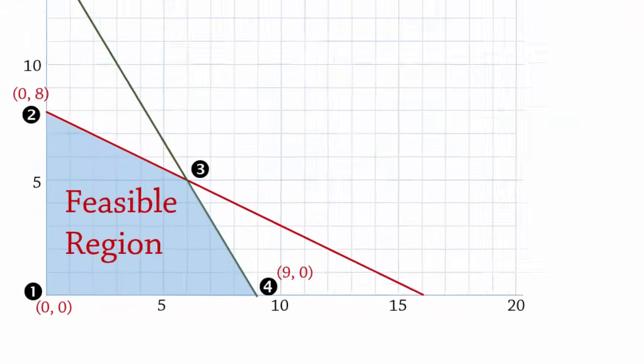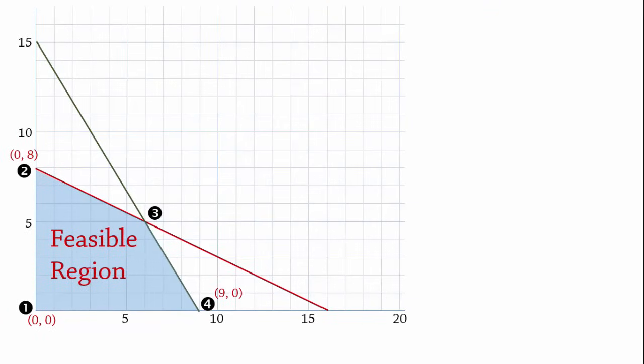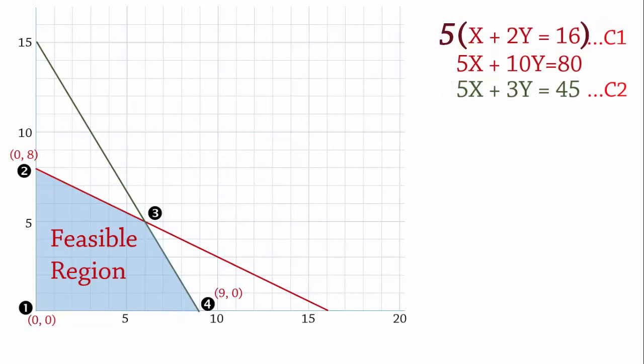So let's see a way to solve the 2 equations simultaneously to determine the actual coordinates. Here are the lines for the 2 constraints. Now, suppose I choose to eliminate x. Note that the coefficient of x here in C2 is 5. Then I can simply multiply the first equation by 5 to give 5x plus 10y equals 80.